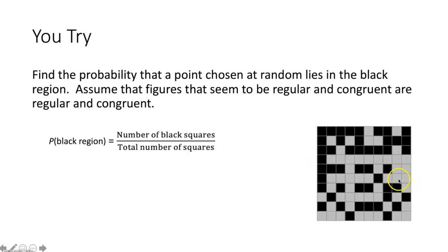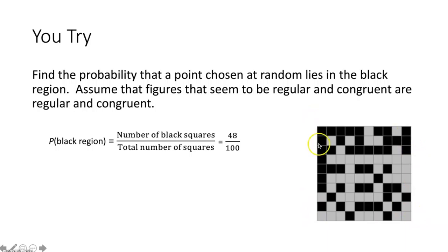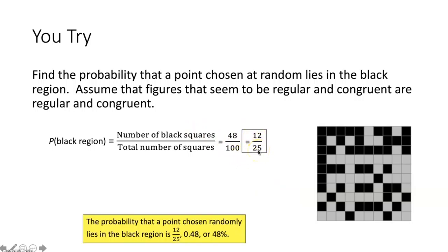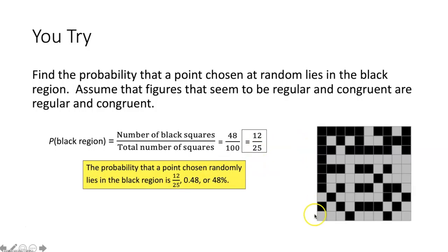There are 48 black squares and 100 total squares in the grid. Simplifying 48 over 100 gives 12 over 25, meaning the probability that a point chosen at random lies in the black region is 12 over 25, or 0.48, or 48%.